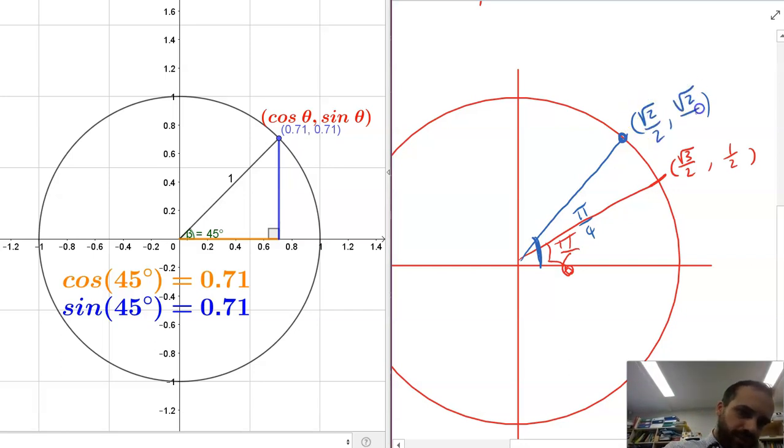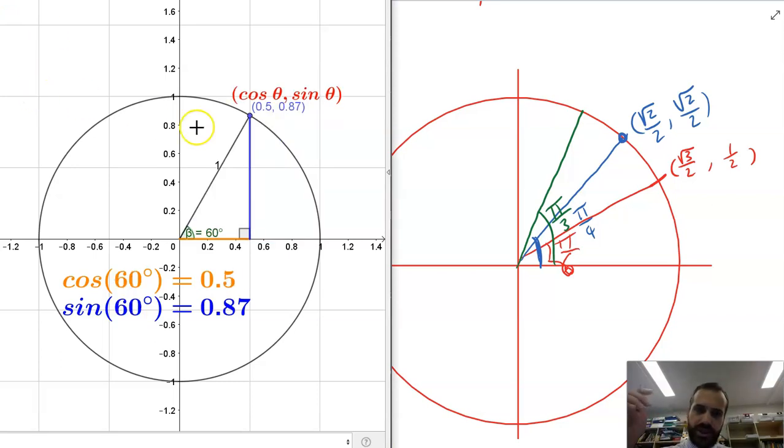And the one that we also know about—up here somewhere—π/3, making a bit of a mess here. If we move over to π/3, let's just move straight to there, which is 60 degrees, we can see 0.5, 0.87.